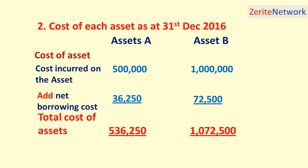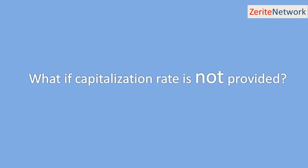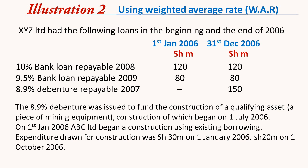In the example, the rate we used was 9% because it was given. But what if the capitalization rate is not provided? If the capitalization rate is not provided, then a weighted average should be determined. Here's an example: X Limited had the following loans at the beginning and at the end of the given year.